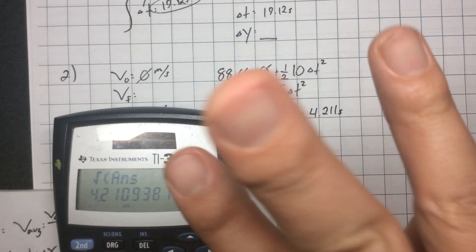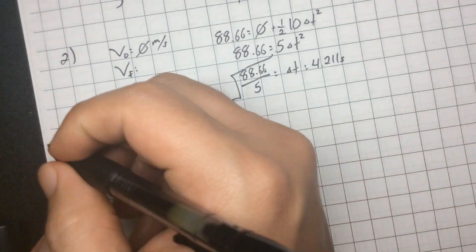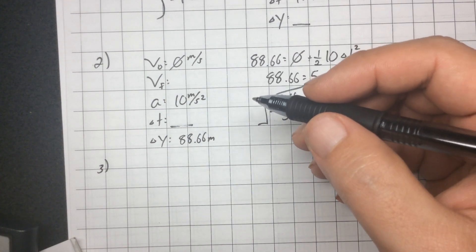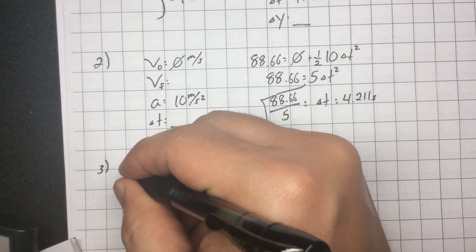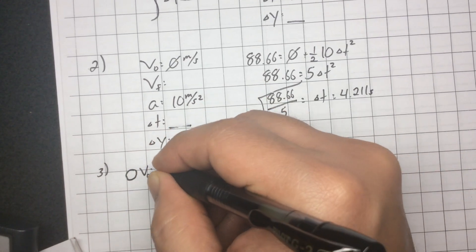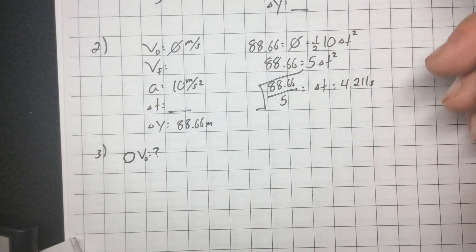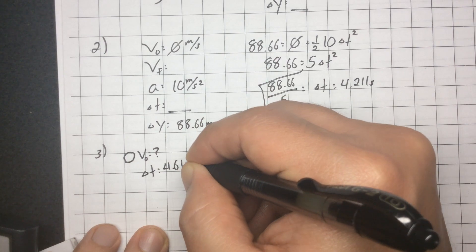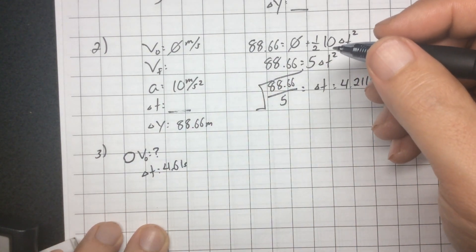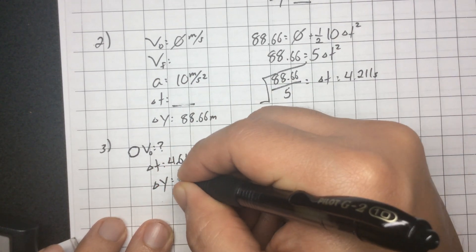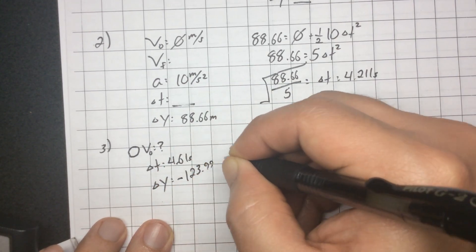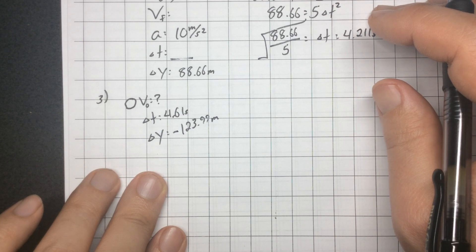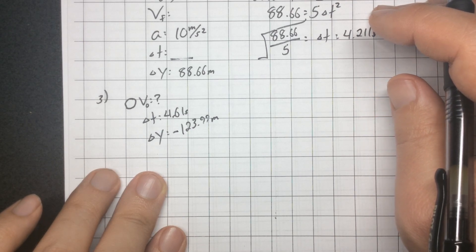Number 3: a ball is thrown with an unknown initial velocity — it can be thrown up or down. If it is in the air for 4.61 seconds and it ends up at a final position of delta y equals negative 123.99 meters — consider up to be positive and down to be negative — I need to find the initial velocity of the ball.